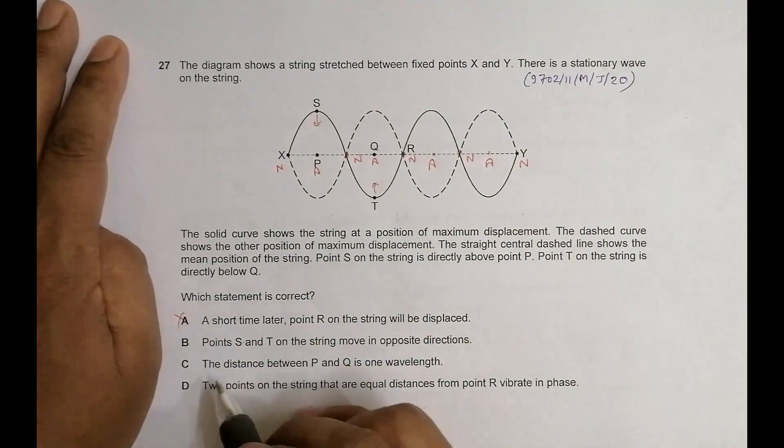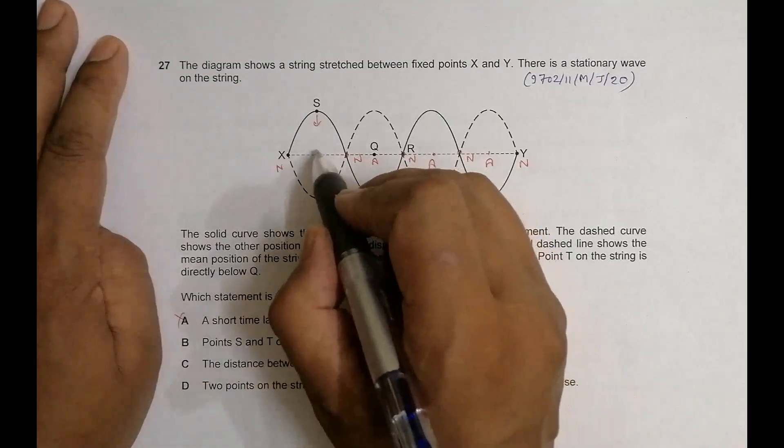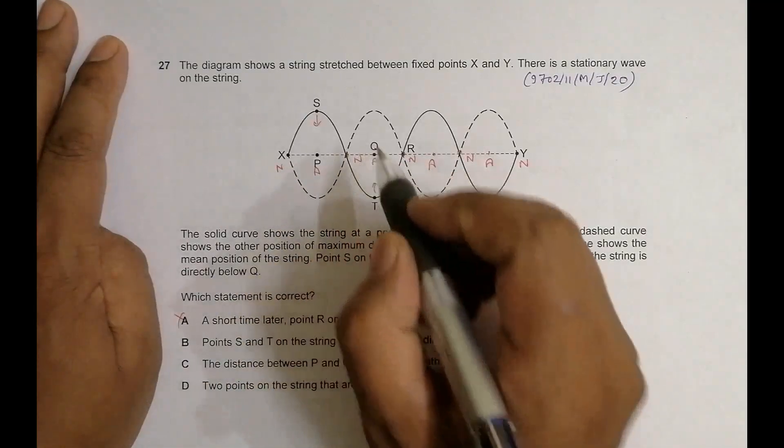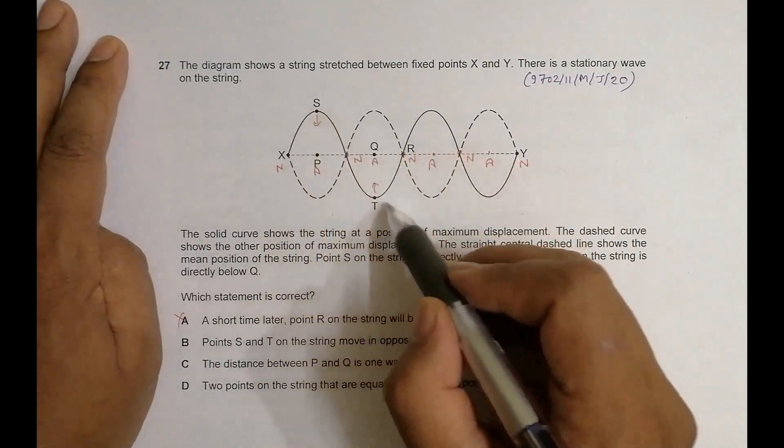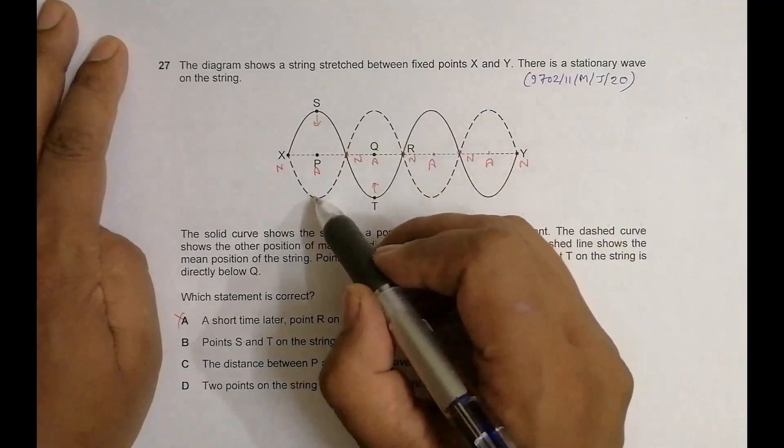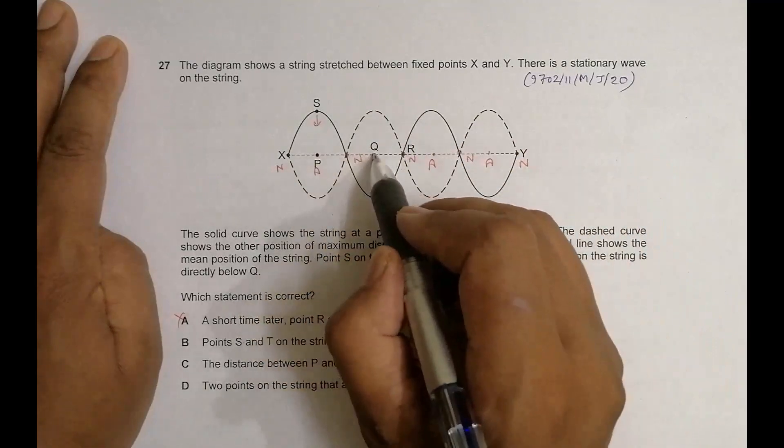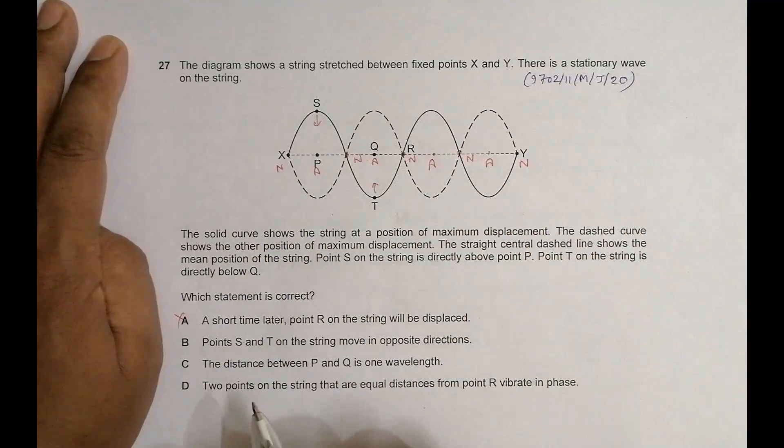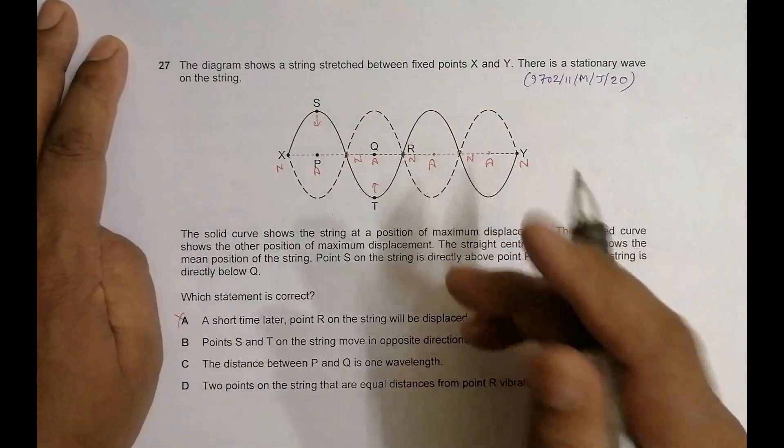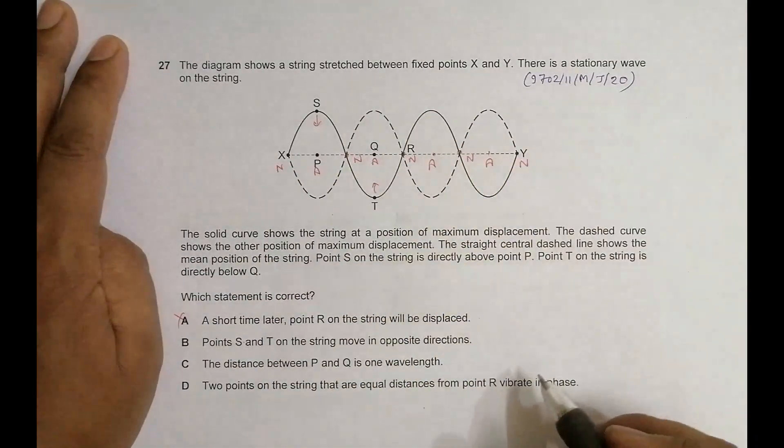Let's go to others also. The distance between P and Q is one wavelength - not true because one wavelength is from here to here or from here to here. From P to Q it is half of the wavelength. Antinode to antinode is half of the wavelength, so this is also wrong.